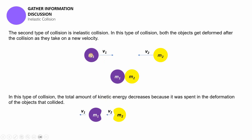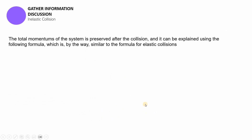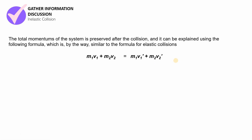So initially, in elastic collision, after the collision, M1 is supposed to bounce back towards the left and M2 is supposed to go towards the right. Now, in inelastic collision, M2 is also going towards the left after being deformed in the collision. The total momentum of the system is preserved after the collision — let's be clear on that — and it can be explained using the following formula, which is similar to the formula for elastic collision. The formula for inelastic collision is the same as for elastic collision, but there are expected changes in these kinds of sample problems, which will be discussed in the next part.